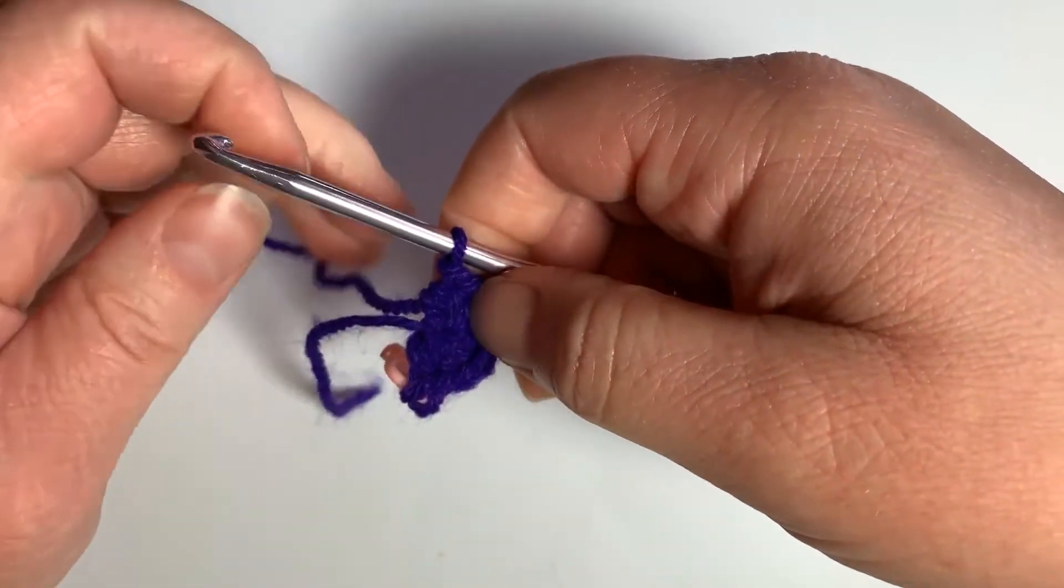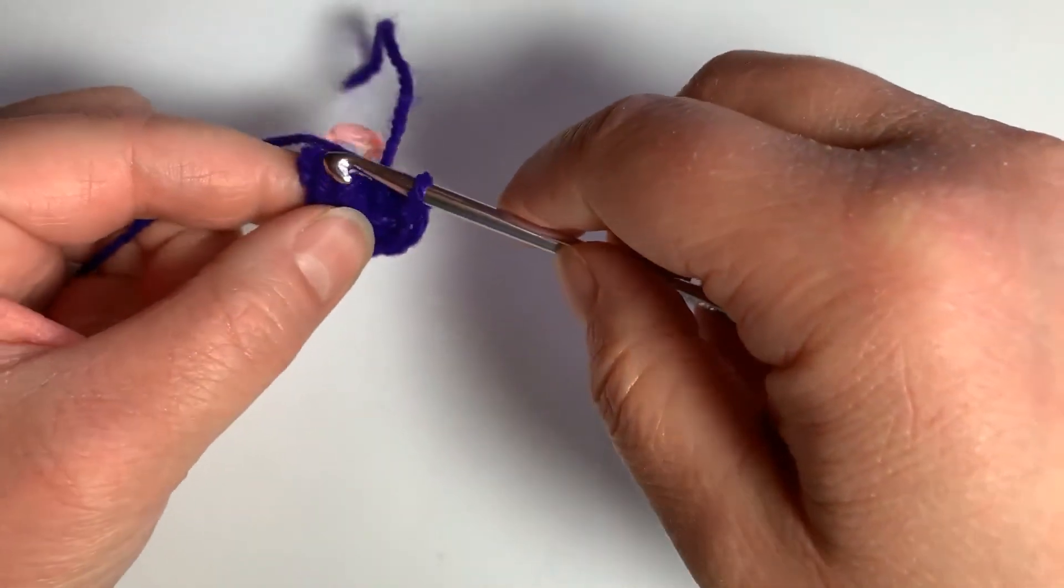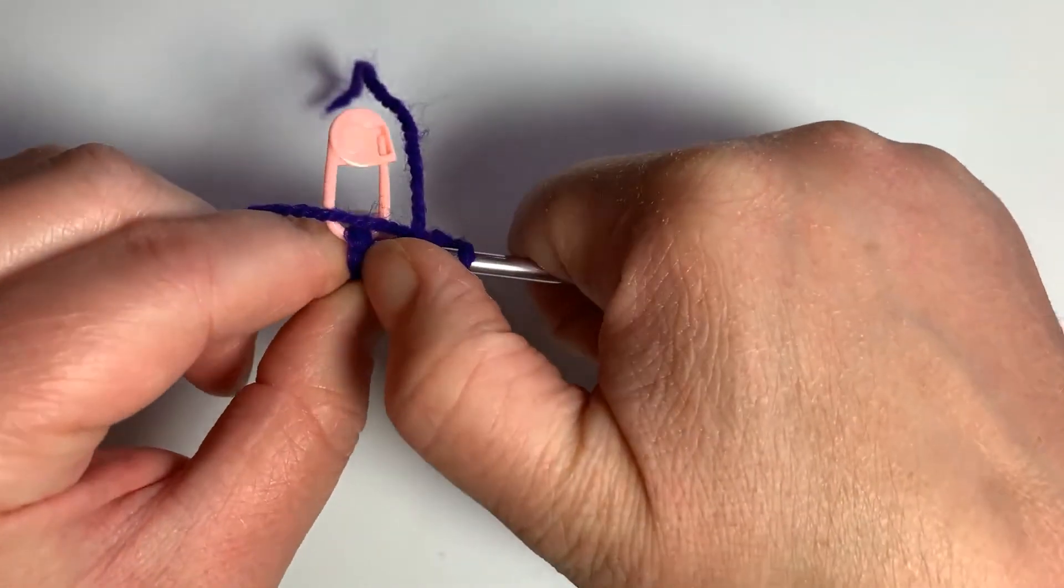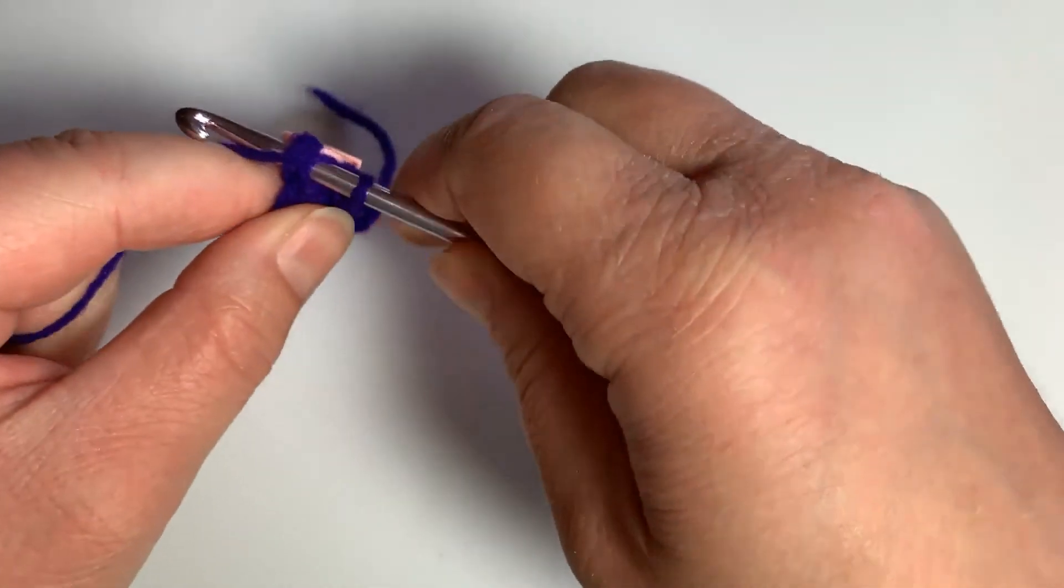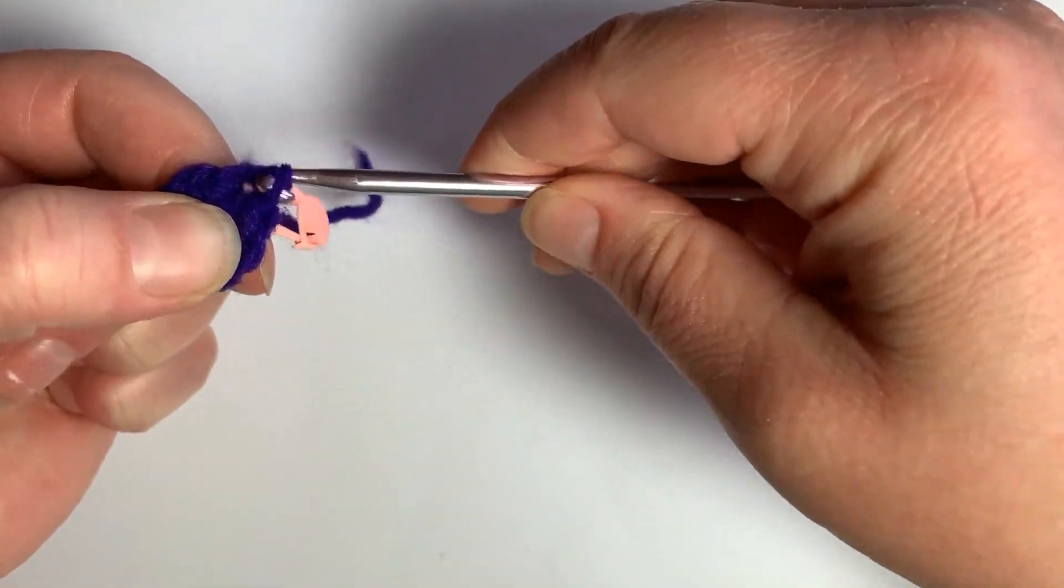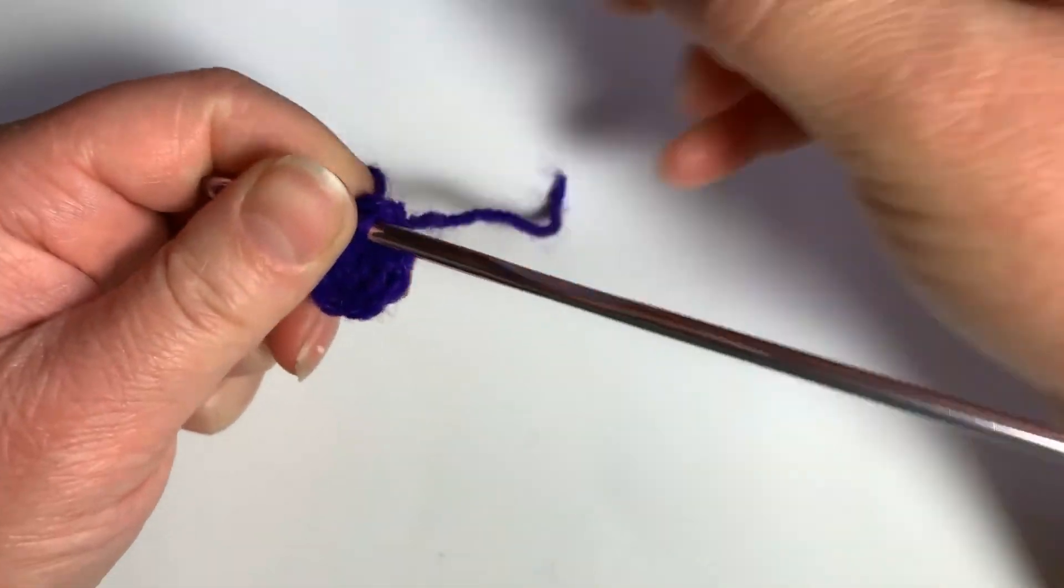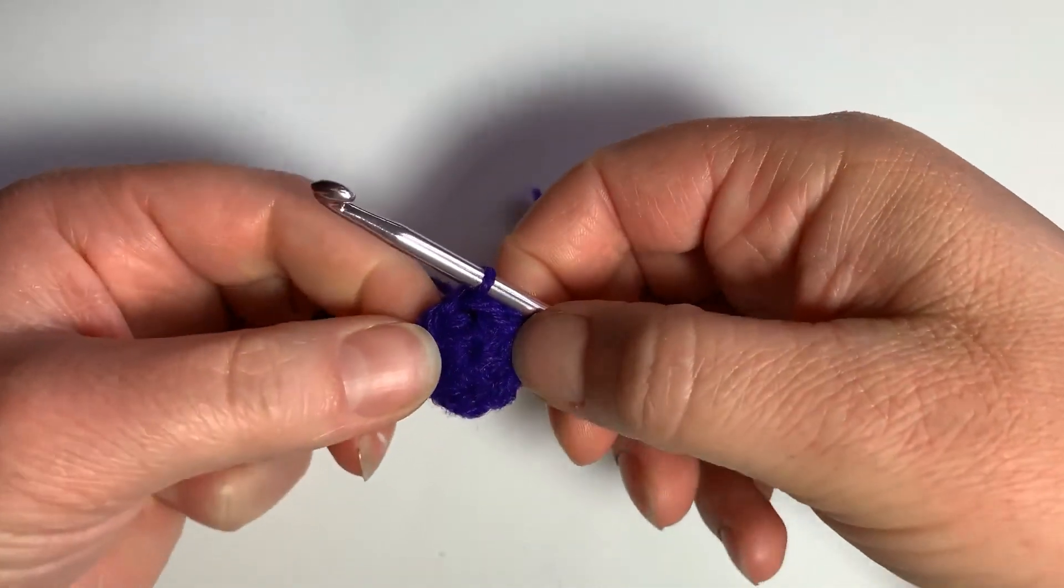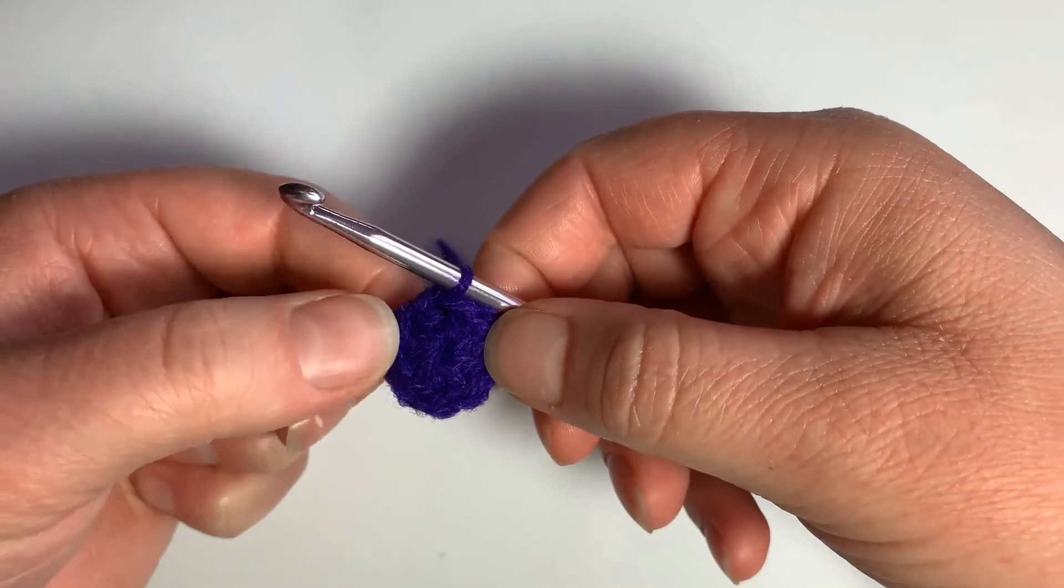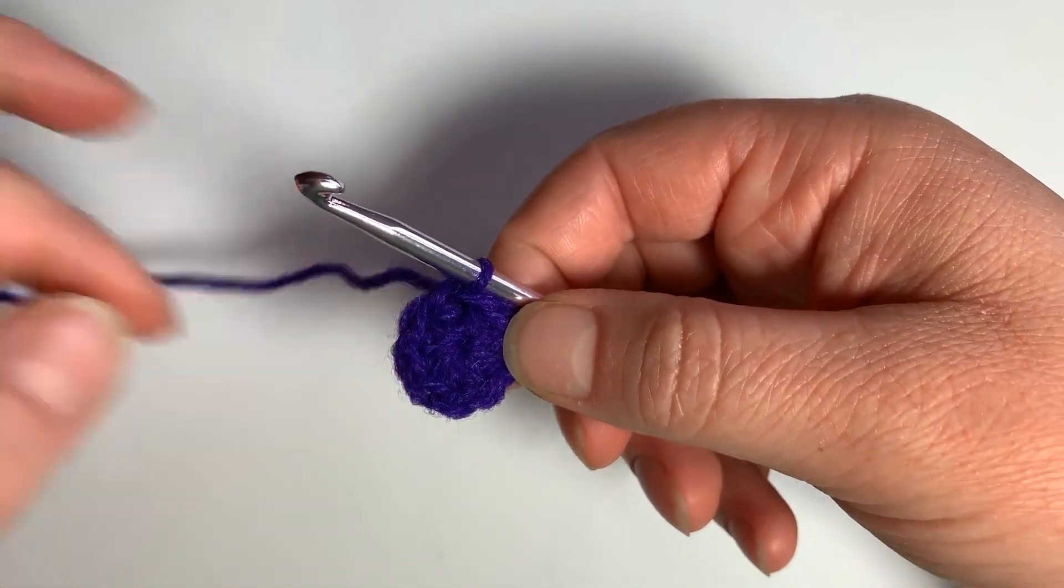And then to close our circle, we are going to either slip stitch into this, or if we're switching colors, we could do an invisible join. And then you would remove your stitch marker. So now you have your half double crochets in a magic circle without any gap in the circle.